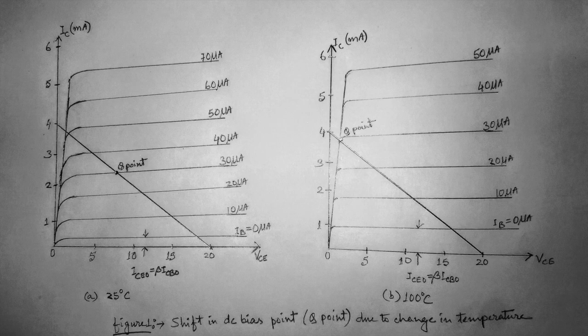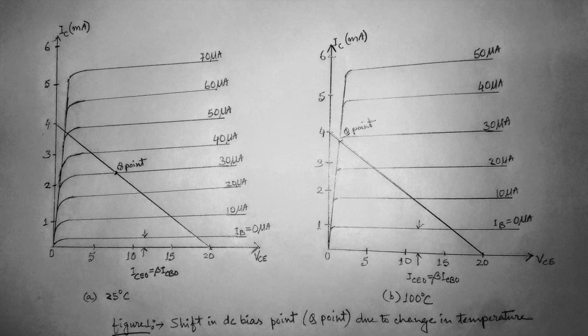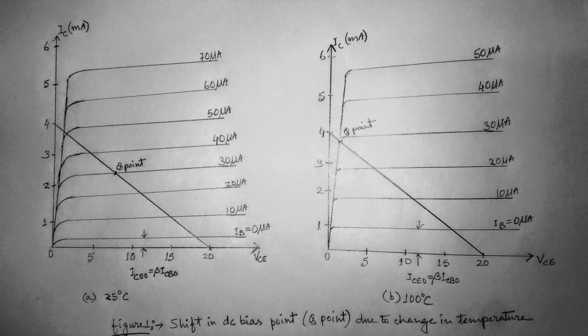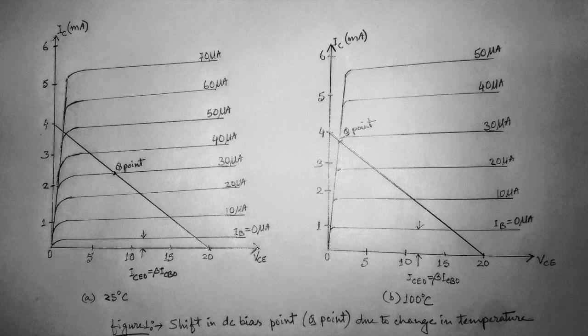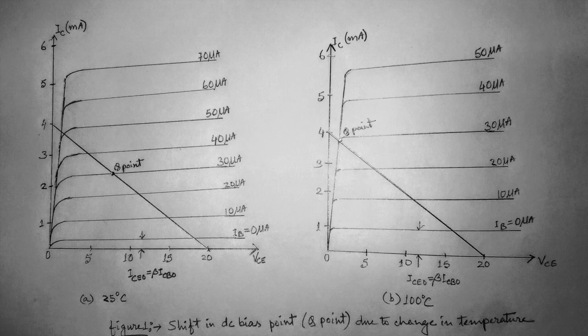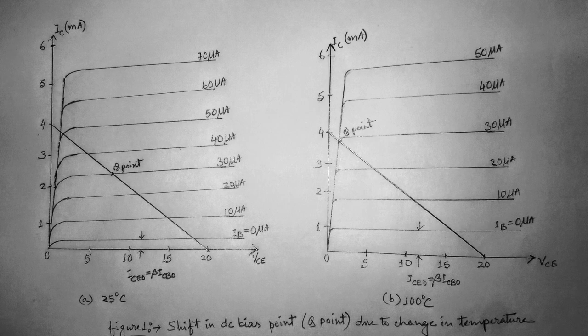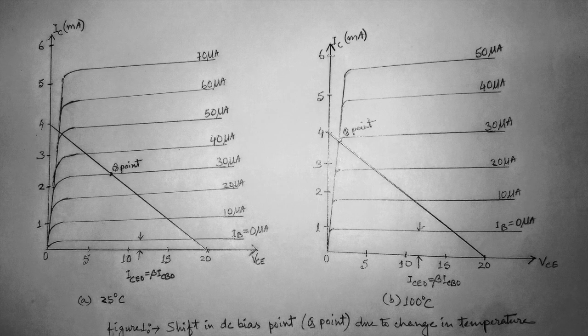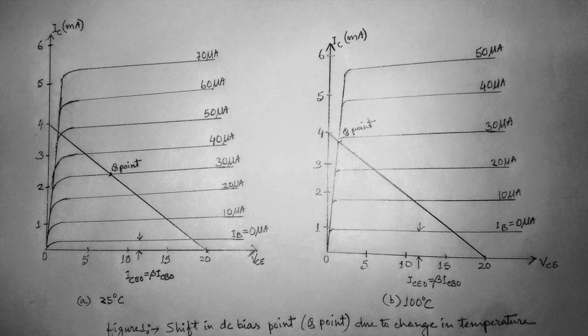An operating point may be specified by drawing the circuit DC load line on the graph of the collector characteristics and noting the intersection of the load line and the DC base current set by the input circuits. An arbitrary point is marked in figure 1A at base current of 30 microampere.